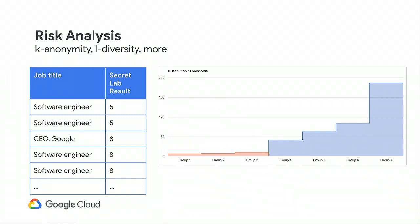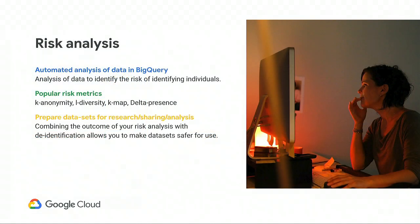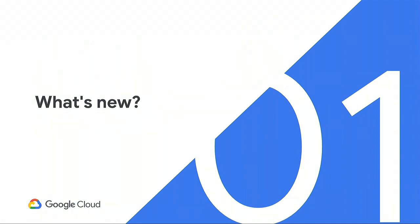A medical researcher conducting a study has been asked by their ethics board to remove all ability to tie lab results back to patients before publishing. They've removed identifying information — social security numbers, ages, and dates of birth — leaving no direct identifiers. But to be sure patient identity is protected, they turn to risk analysis. In this simple example, we can see outliers where the job title field is actually identifying, even though it's not normally considered PII. Risk analysis helps users find this kind of data automatically — data that is very revealing if joined with another dataset. We provide metrics to increase your understanding of the risk your data might pose if it were to leak or be shared intentionally.